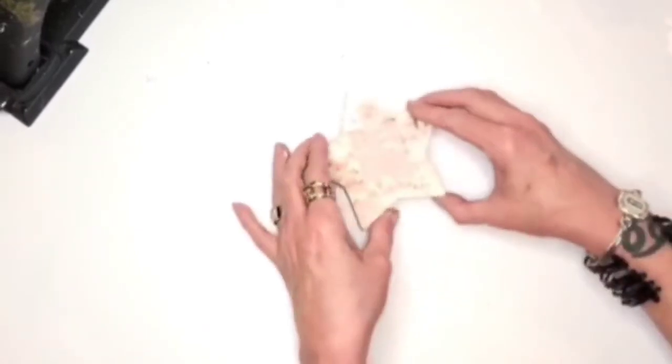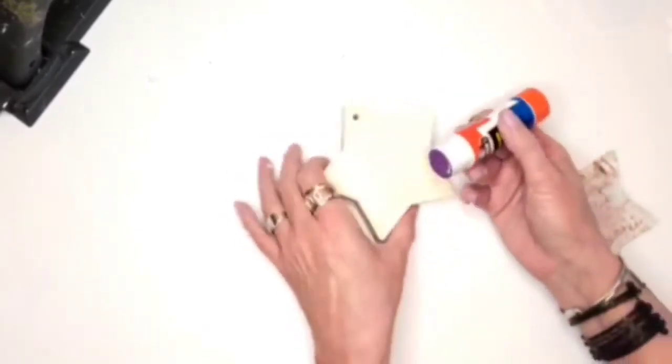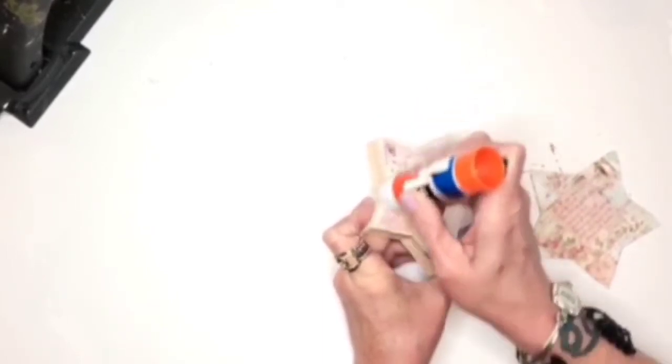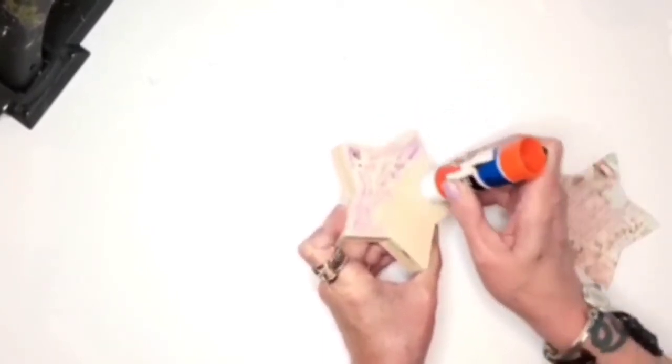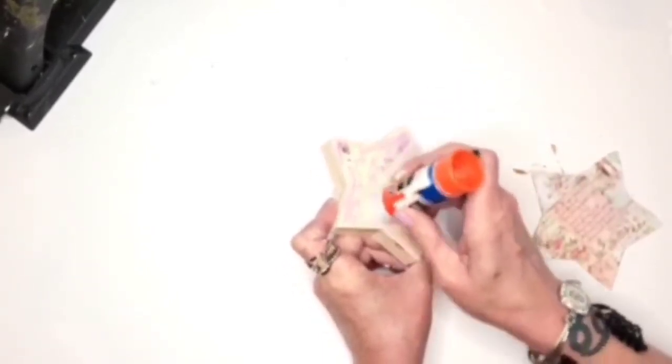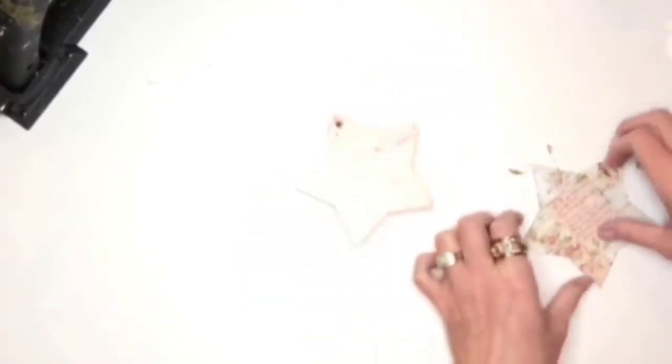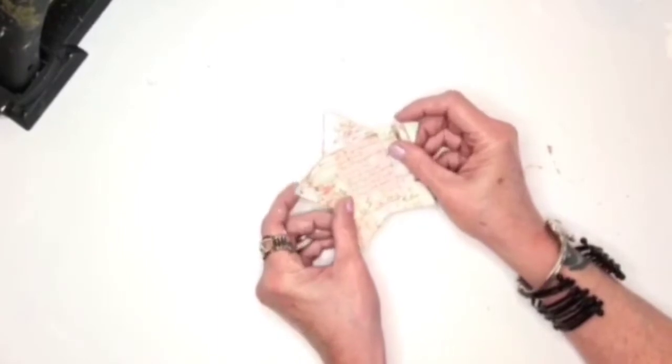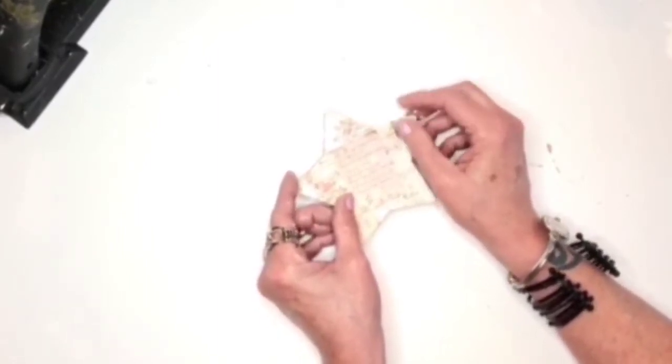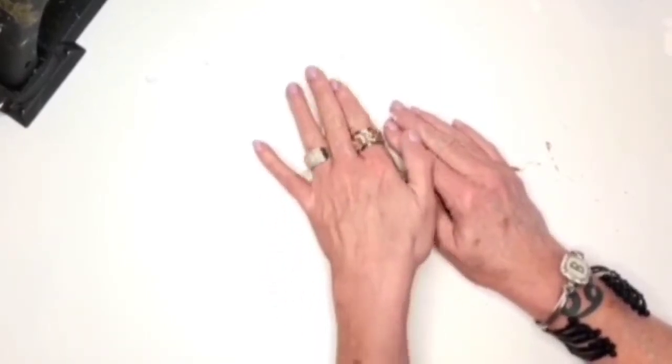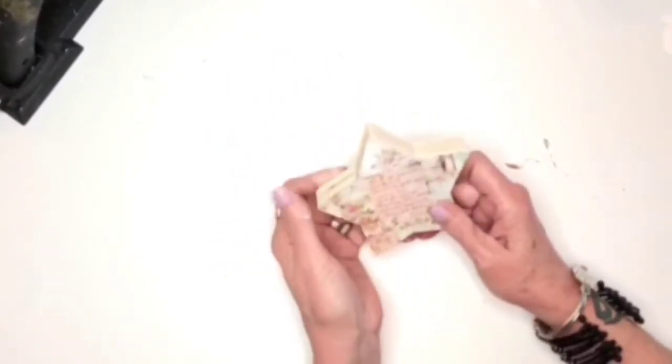On to DIY number four. I took some more of the scrapbook paper from that scrapbook paper book that I picked up from Joann Fabric. I've got this little wooden star cutout from the dollar tree and I'm going in with my glue stick. I'm just placing it down making sure that I have all the edges down. I just add a little ribbon in the back to hold it up.